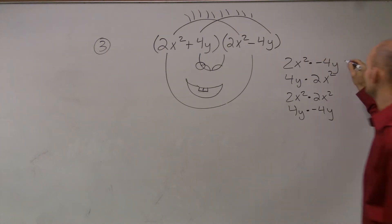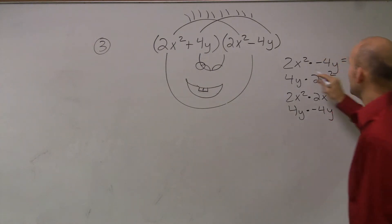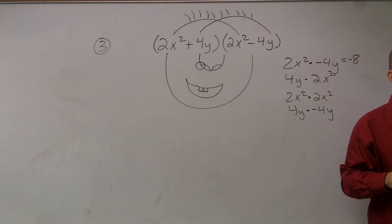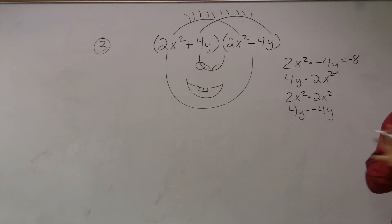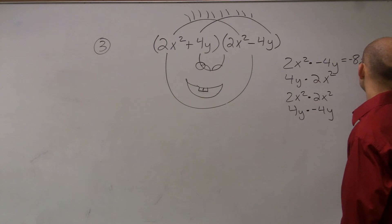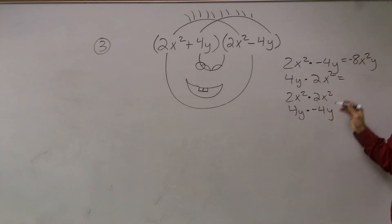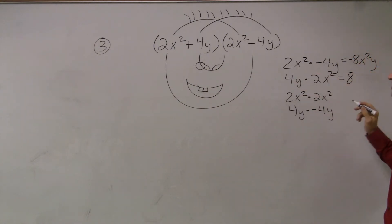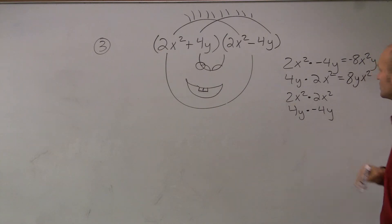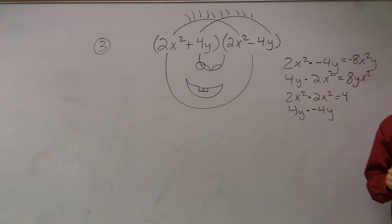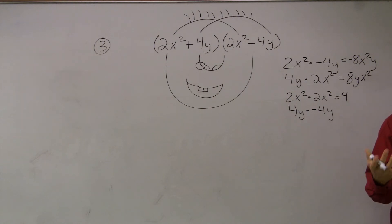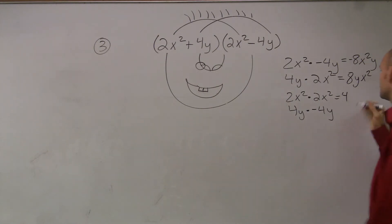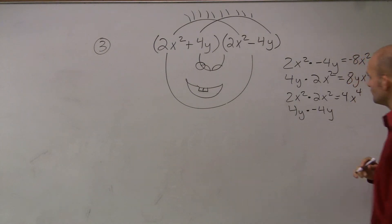2 times a negative 4 is a negative 8. And are x² and y the same term? No. So you don't combine them and add their exponents — you just leave them multiplied. So that becomes x² and y. Next one: 4 times 2 is 8. Again, we have the same issue — y times x². Then here I have 2 times 2, which is 4. And x² and x² — do those have the same base? Yes, they have the same base x. So what do you do with your exponents? You add them. So 2 plus 2 is 4.